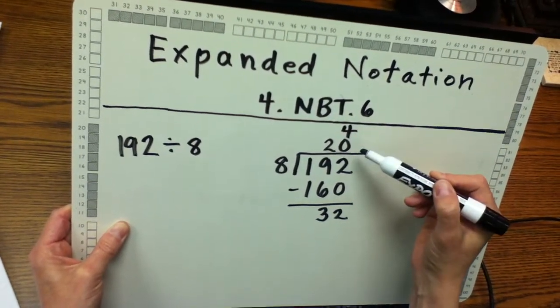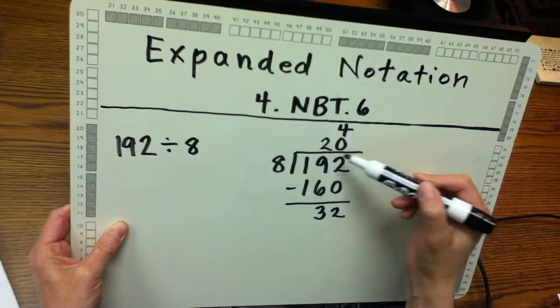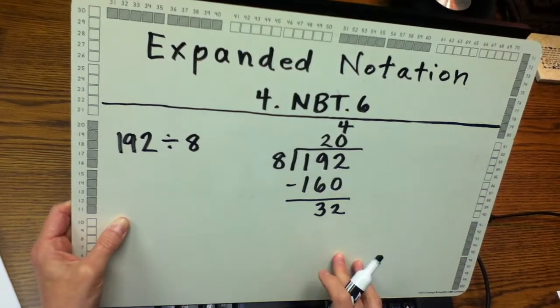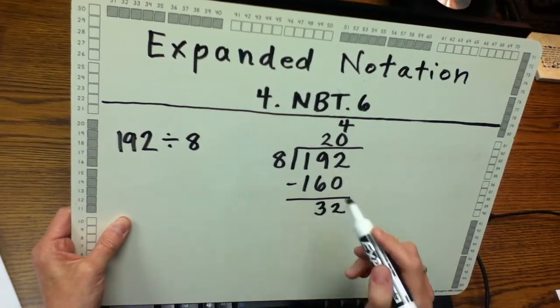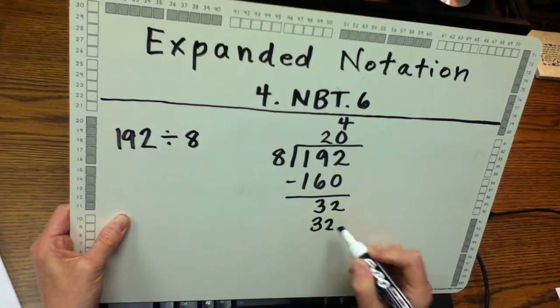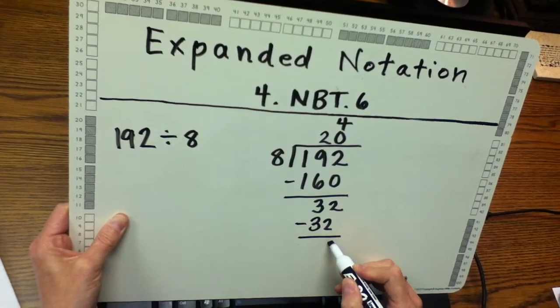Now I have two partial quotients recorded above the long division sign. Then I multiply 4 times 8, I have 32, and I write the difference below that.